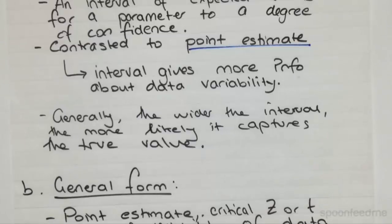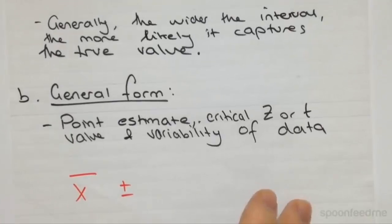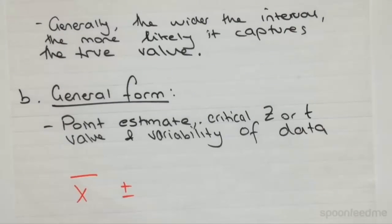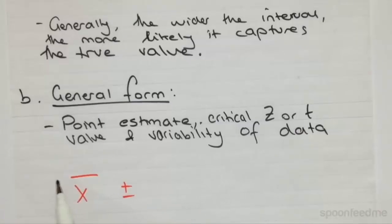So the general form of a confidence interval is essentially that we're going to take the point estimate for what we're trying to estimate. So in this case, we're looking at a population mean.